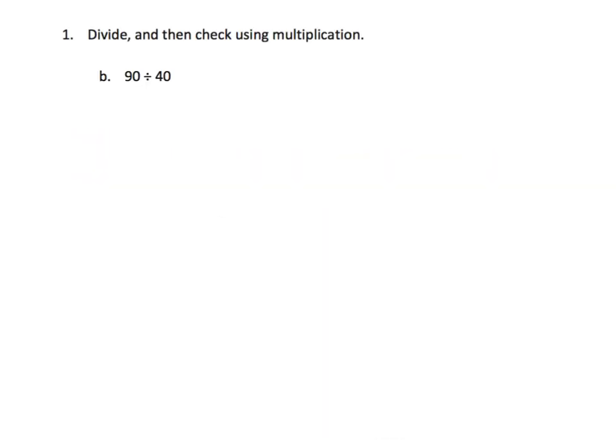All right, so this problem says to divide and then check using multiplication. Parents and teachers, a big heads up. The problem says 90 ÷ 40. But a lot of students are going to want to write it incorrectly, and we need to help our students understand that that is totally wrong.